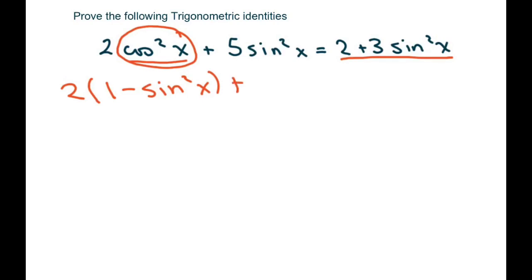And then just copy this part down, five times sine squared of x. I'm going to go ahead and distribute here, and I get two minus two sine squared of x plus five sine squared of x.